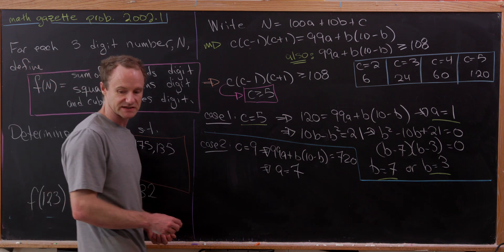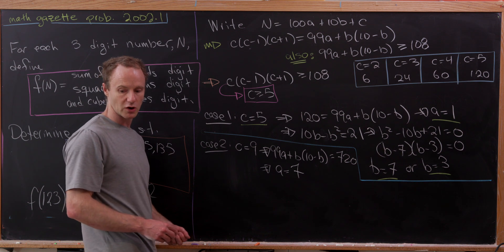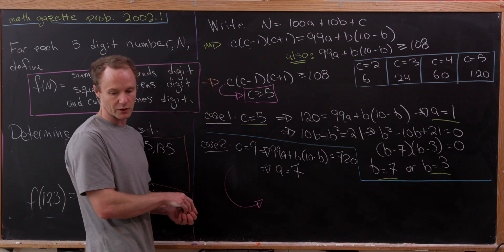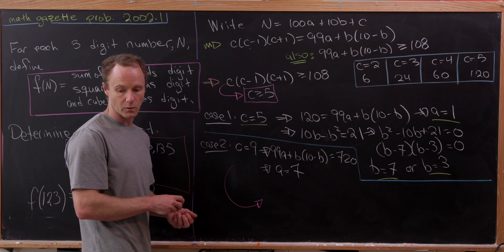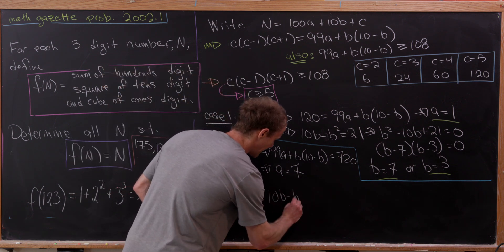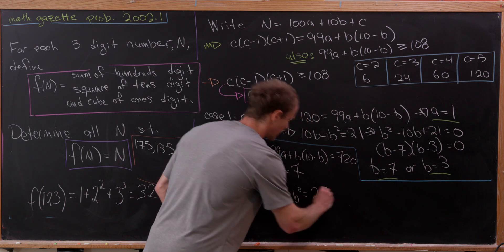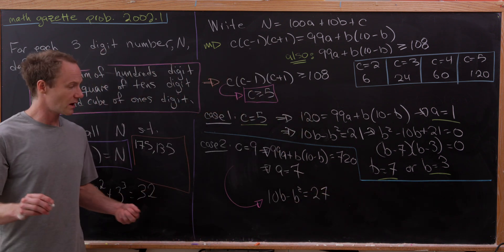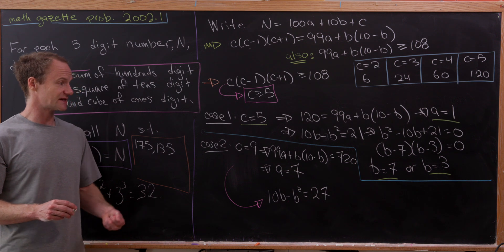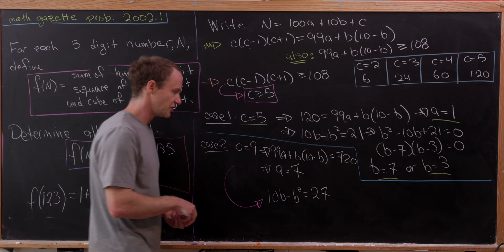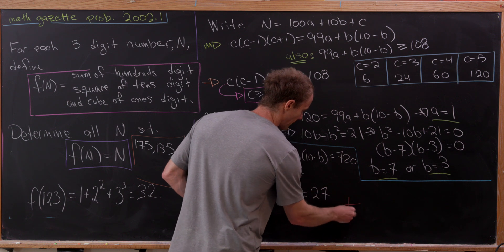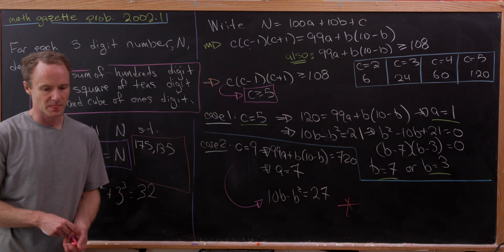But that's going to cascade into the following quadratic equation for b. And that'll be 10b minus b squared is equal to 27. And you can check that that doesn't have any integer solutions. Since that doesn't have any integer solutions, you don't get one of our solutions from this case.